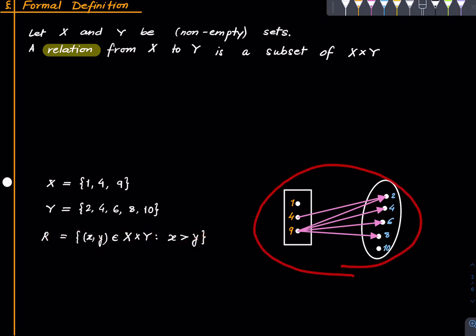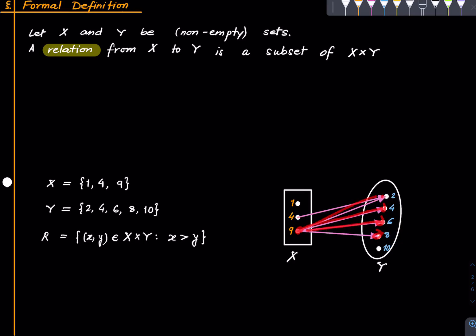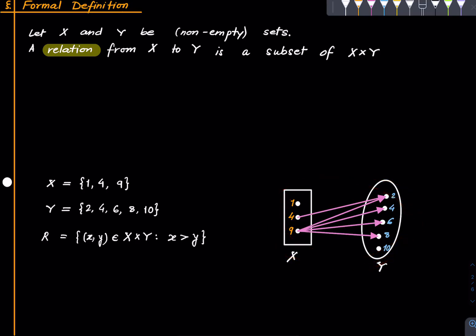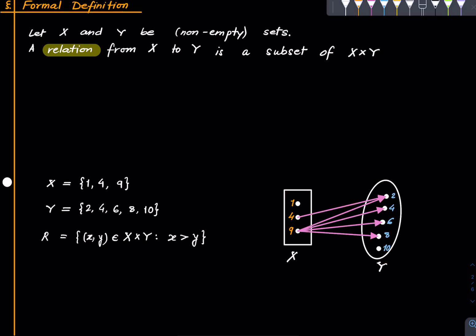One can make a picture to depict this. This side is the set x, this side is the set y, and these arrows capture exactly which elements in x are greater than which elements in y. 1 is not greater than anything here so it is left with no arrows. 4 is greater than 2 but nothing else, so one arrow goes from 4 to 2. And 9 is greater than 8, 6, 4, and 2, so it has arrows going out into all of those. Just like we draw diagrams for functions, we can draw such diagrams for relations. The key difference is that for functions nothing on the left can be without an arrow and each element has exactly one arrow, whereas in relations things are much more relaxed — so we can see that relations are generalizations of functions.